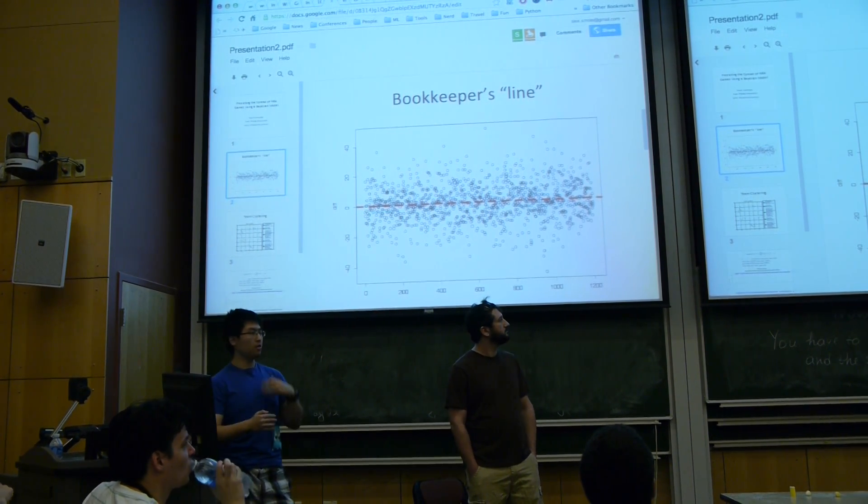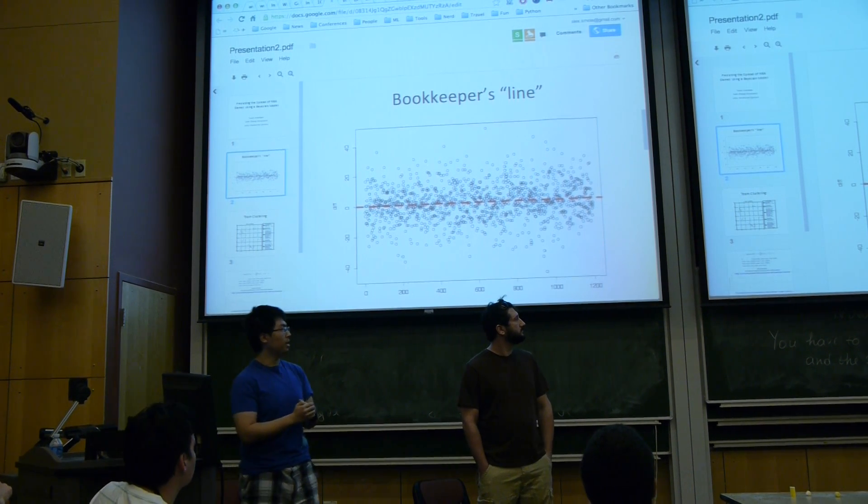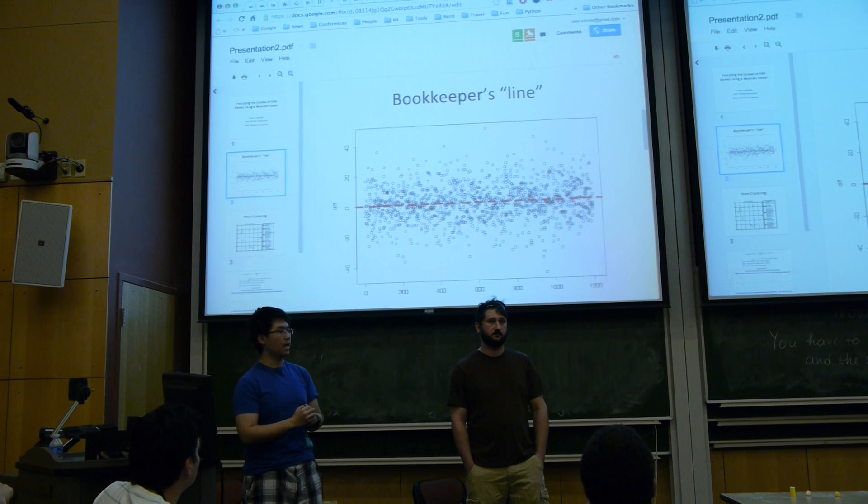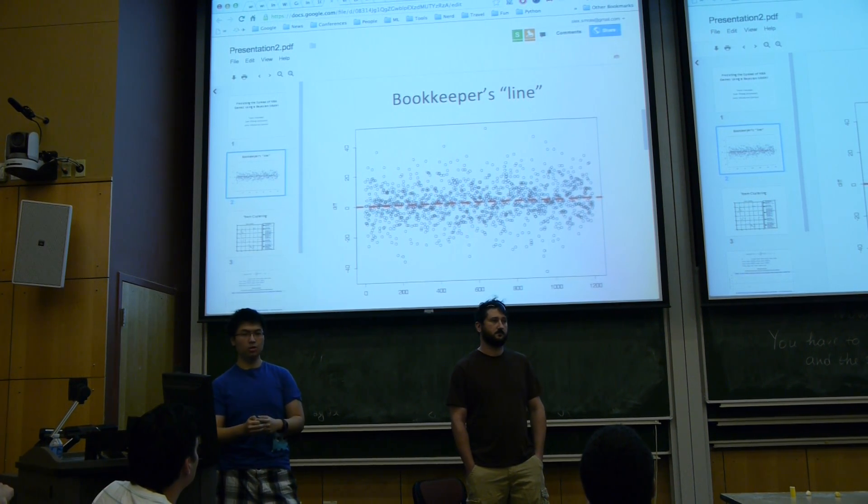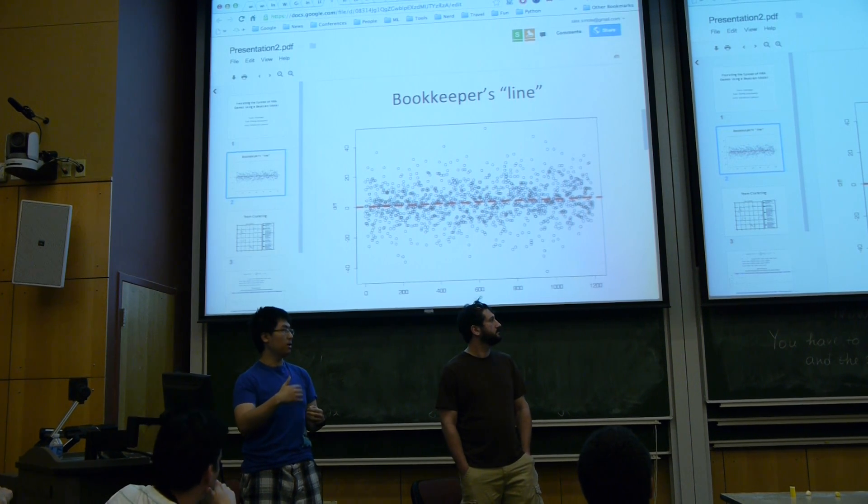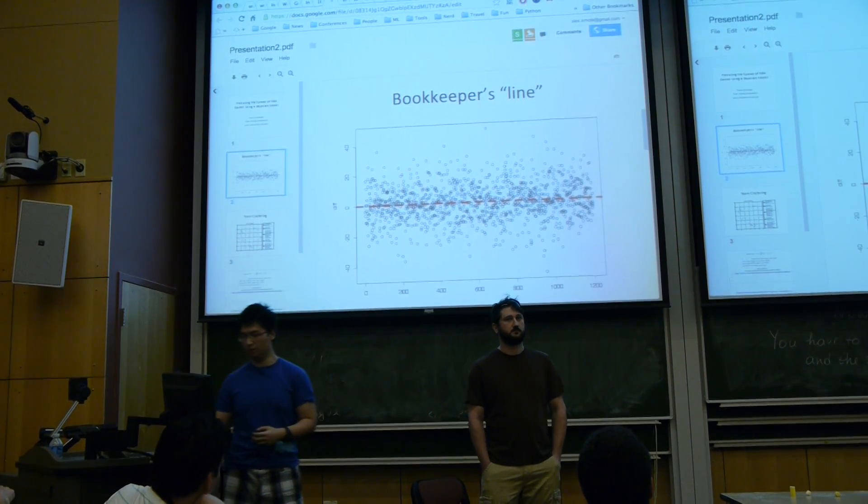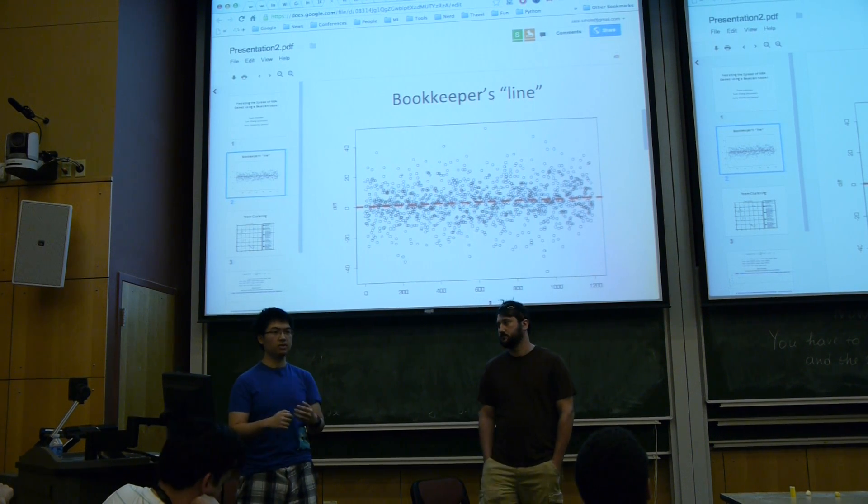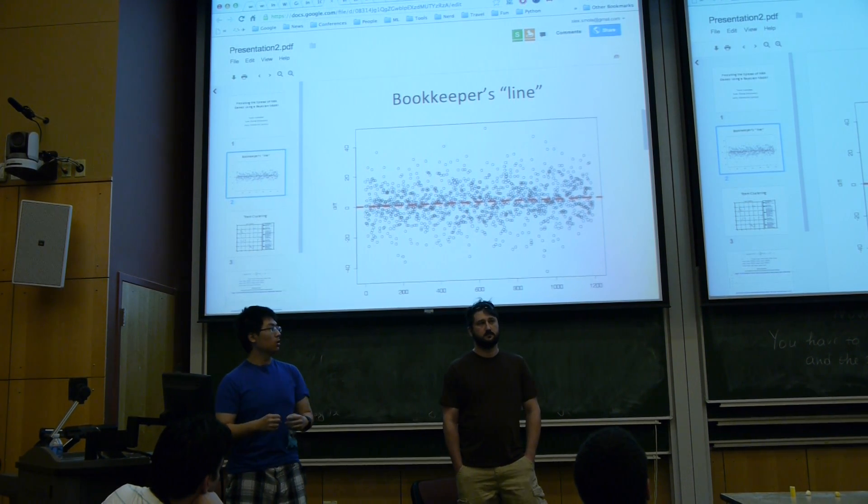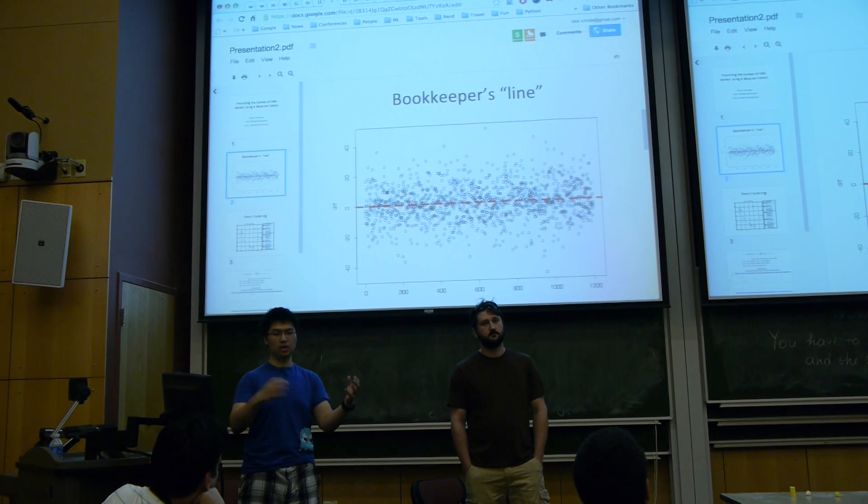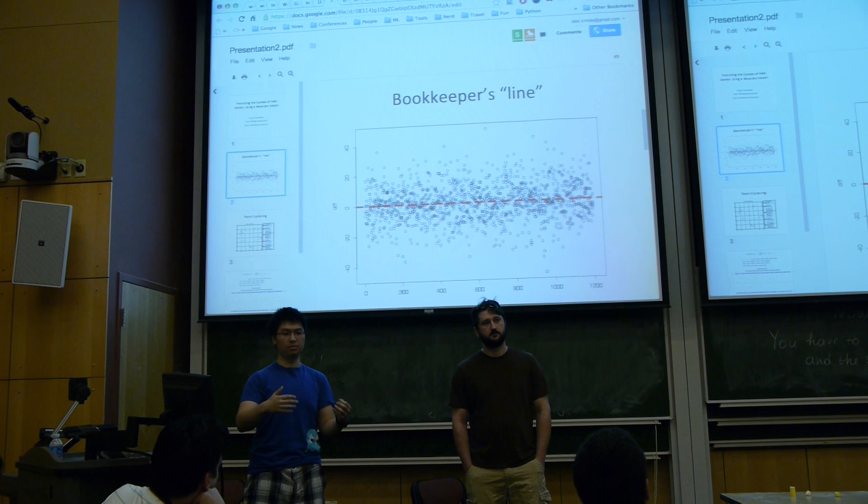And the other thing we like about Naive Bayes is that it doesn't only give us a label for the game, but also a probability, which is actually very useful on betting games because that can help us assess the risk of our bet. The problem of Naive Bayes is that you cannot predict unseen data, which means we cannot predict the outcome of a game between two teams that has never played in this season before.